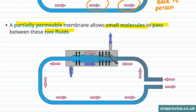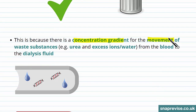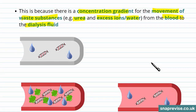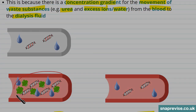This partially permeable membrane has small holes which allow the entry and exit of molecules. This happens because there is a concentration gradient for the movement of waste substances — such as urea, excess ions, and water — from the blood into the dialysis fluid. The patient has an excess of ions, water, and urea, which are at a higher concentration in the blood.